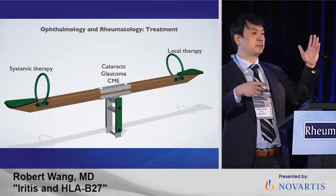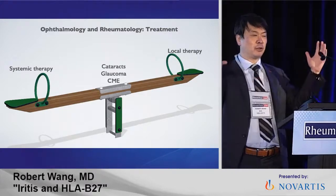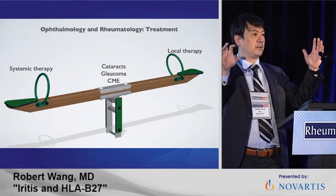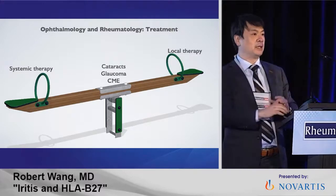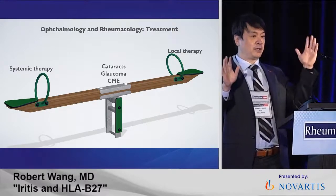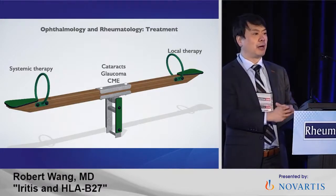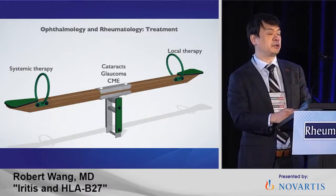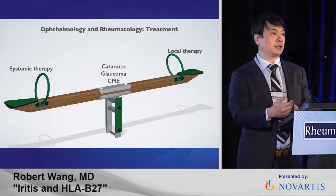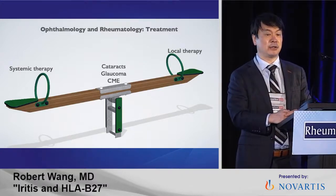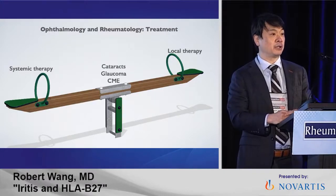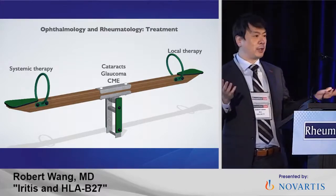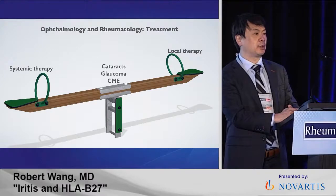Even with the most perfect cataract surgery, people almost 100% have leakage in the macula on fluorescein angiogram that usually goes away, but sometimes needs treatment. Most of the time anterior uveitis doesn't lead to cystoid macular edema. Why do we worry? It's neural tissue. Recurrent bouts of cystoid macular edema can cause permanent damage to vision — vision drops to 20/40, then 20/60, then 20/70, and they're almost not legal to drive anymore. It's a big change in quality of life.